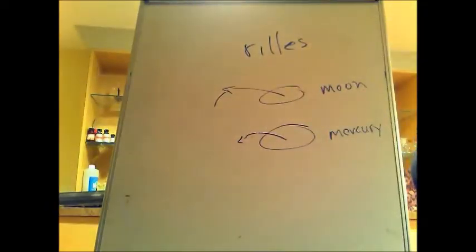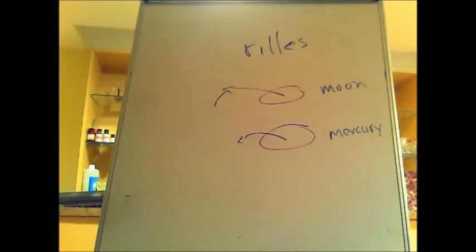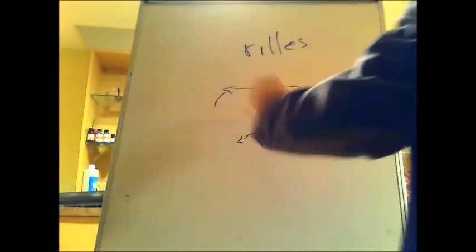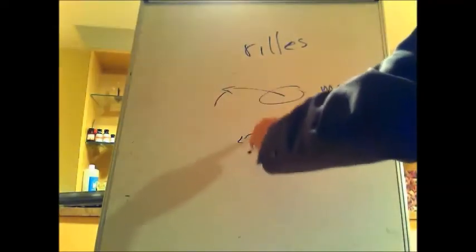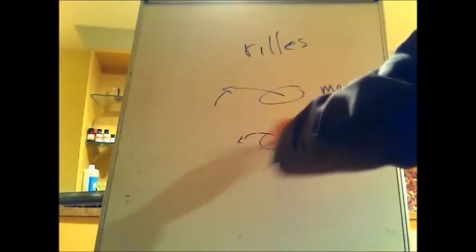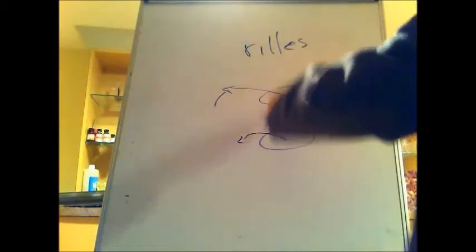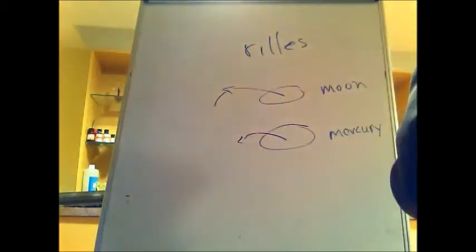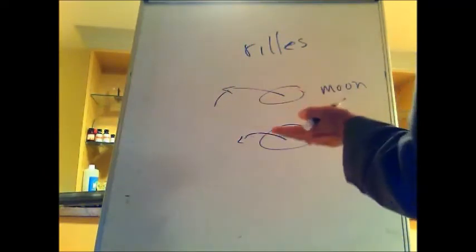And that is indeed the case. Craters on Mercury are less densely packed, and the intercrater plains cover about 40% of the planet's surface. Crater walls are not as high, again because Mercury has a higher gravitational field, and material does not pile up as high either — it stays closer to the craters.